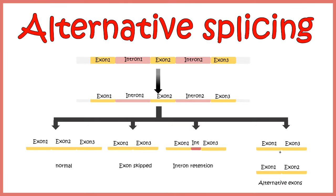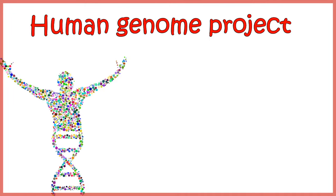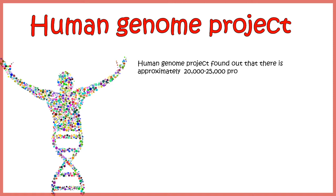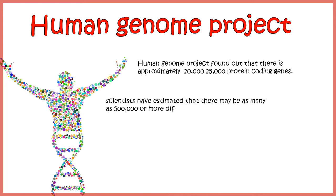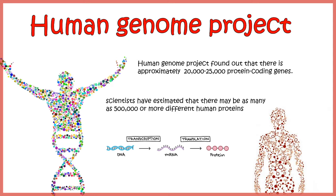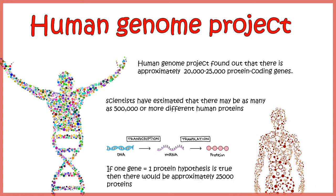In this video we'll talk about alternative splicing and the mechanism which leads to it. From the Human Genome Project we know the human genome has at least 20 to 25,000 genes. But when scientists tried to figure out the proteome — the total number of proteins in humans — they found the estimated number to be around 500,000.